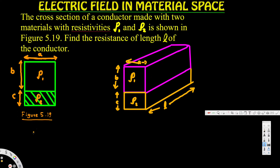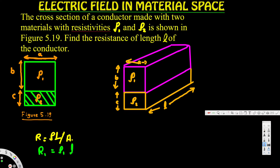We know the resistance equation is R = rho * l / A. Using that, we can find the resistance for each material. R1, the resistance of the first material, is rho 1 times l divided by the area b times a. R2 is rho 2 times l divided by c times a.